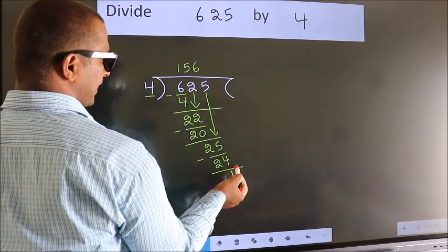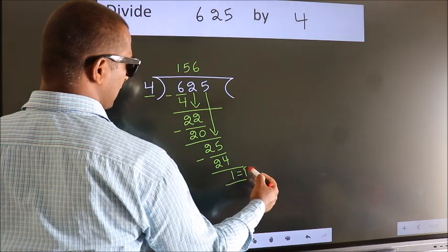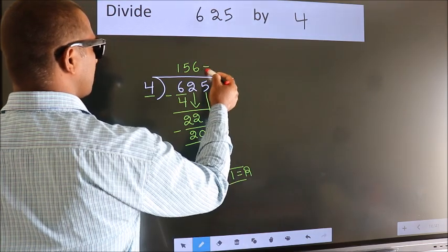No more numbers to bring down. So we stop here. This is our remainder. This is our quotient.